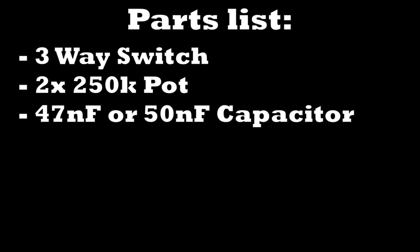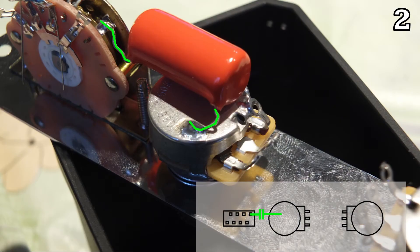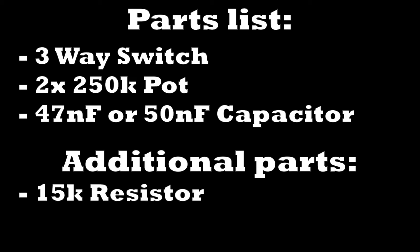When reusing the capacitor of the Telecaster wiring, make sure though that the feet are long enough so you can place it in the new spot. Extending the feet can be tricky and a little bit annoying. In addition to that, you only need a 15 kilo ohm resistor and that's all the parts you need for this wiring. So let's move on to the tutorial.